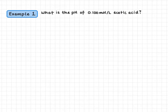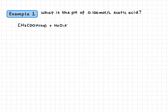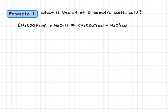In our first example we're going to look at the pH of 0.100 mole per liter acetic acid. With any weak acid question, our first step is going to be to write the ionization equation for the acid. So for acetic acid, CH3COOH will react with water to form an equilibrium with acetate and hydronium. In acetic acid, the hydrogen on the end of the carboxylate group is our acidic hydrogen. We can write ICE down the side.